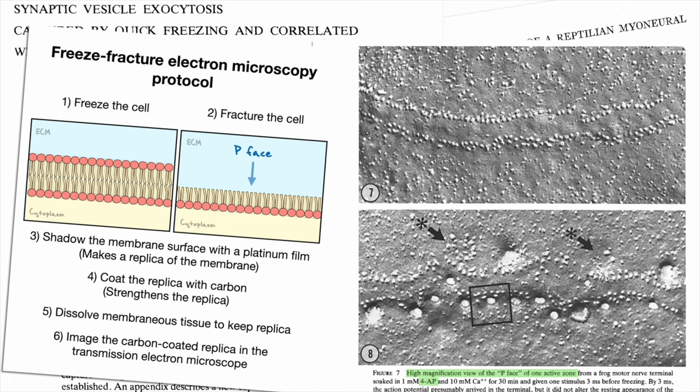The second panel corresponds to a freeze image made 5ms after stimulation. As you can see in the second panel, there are deformations in the membrane immediately after synaptic activity. The team proposed that these were vesicles undergoing exocytosis. The small dots around are thought to be voltage-gated calcium channels.